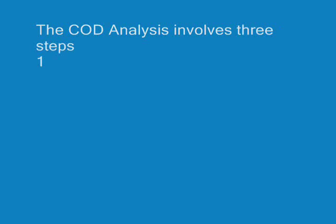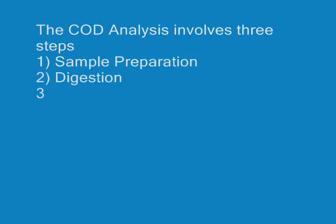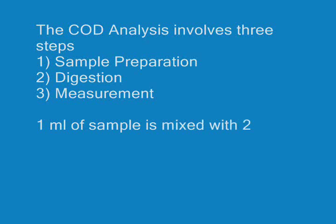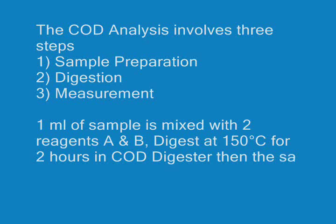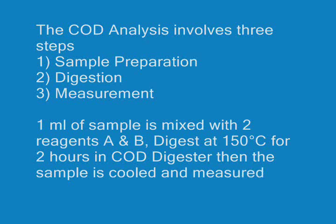The COD analysis involves three steps: first, sample preparation; second, digestion; third, measurement. One ml of sample is mixed with two reagents, A and B, and digested at 150 degrees Celsius for two hours in a COD digester. Then the sample is cooled and measured on the COD analyzer.